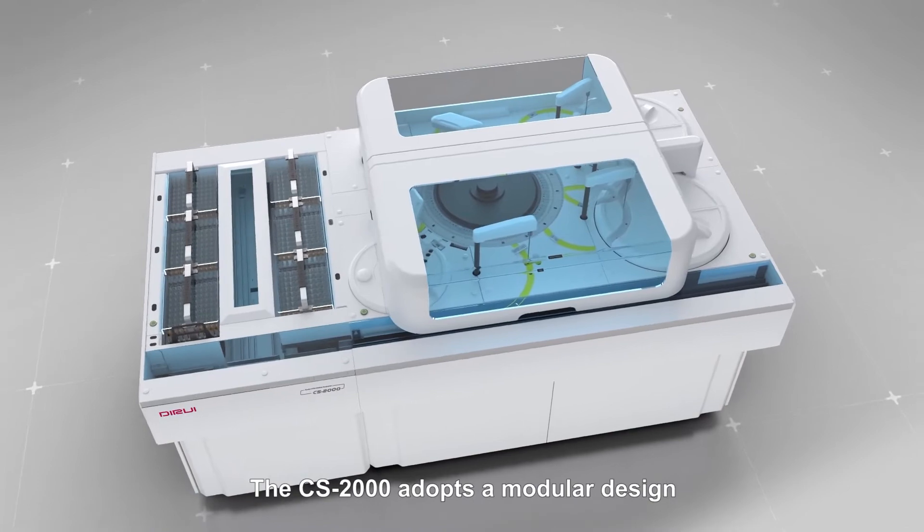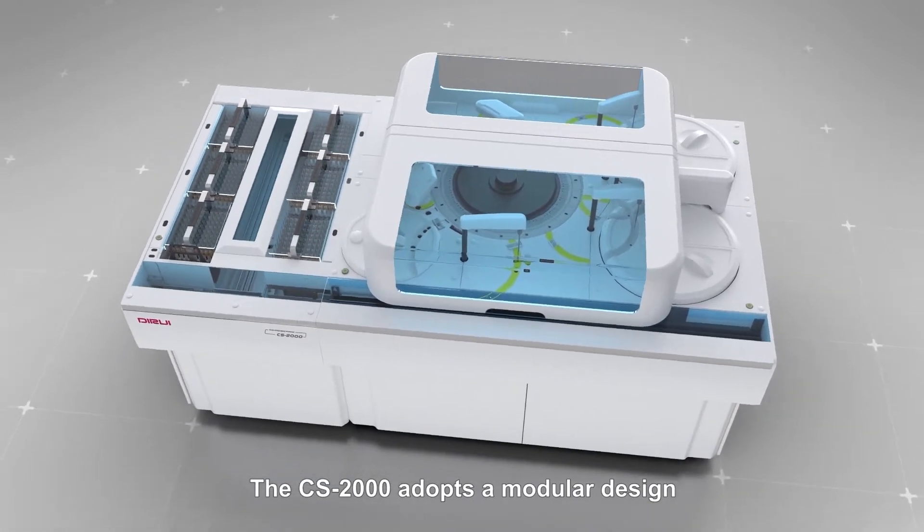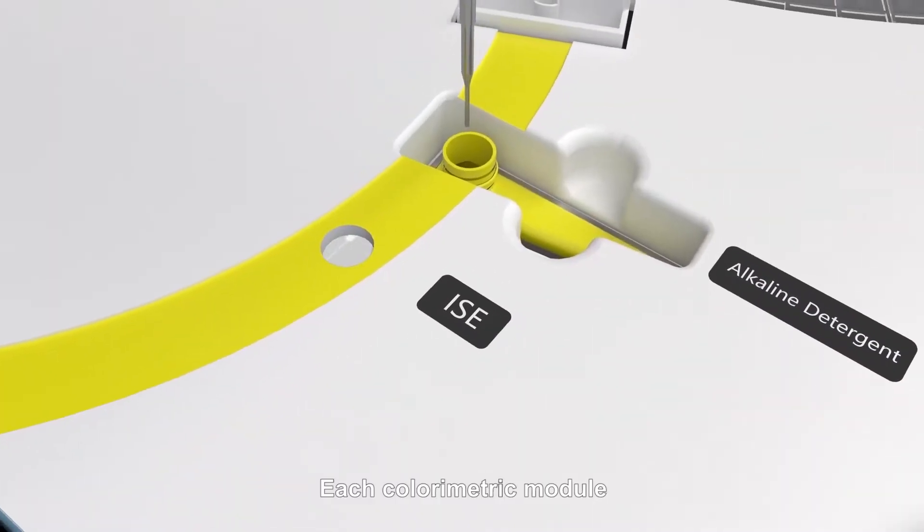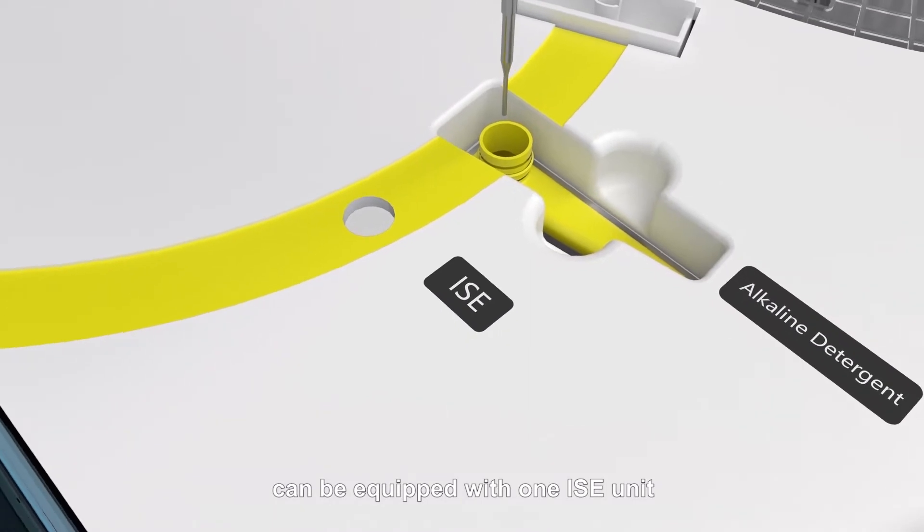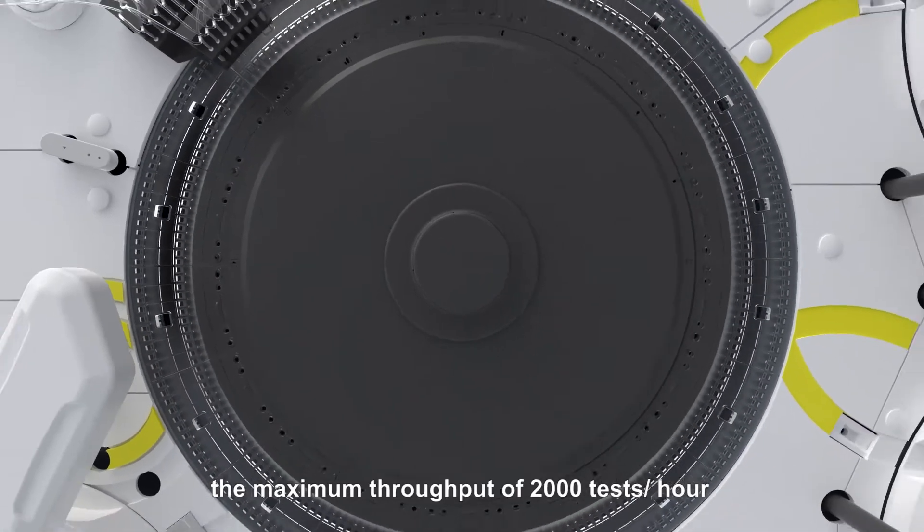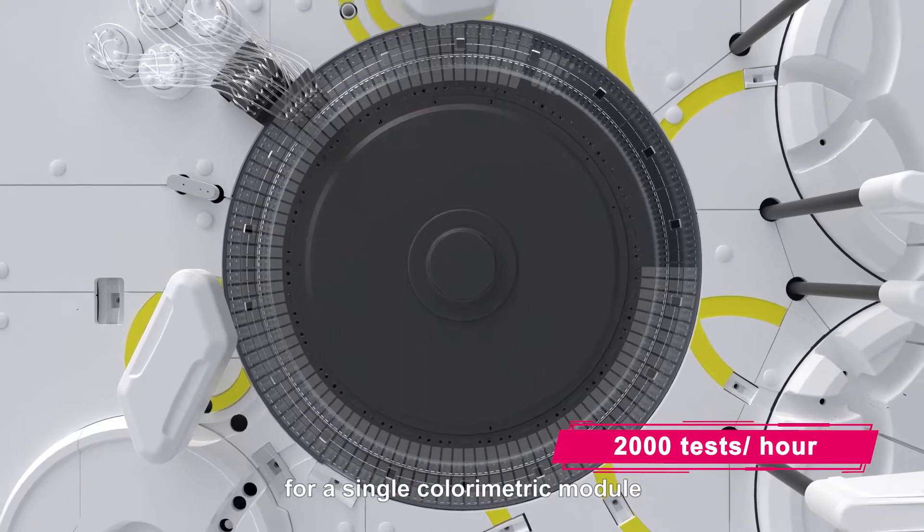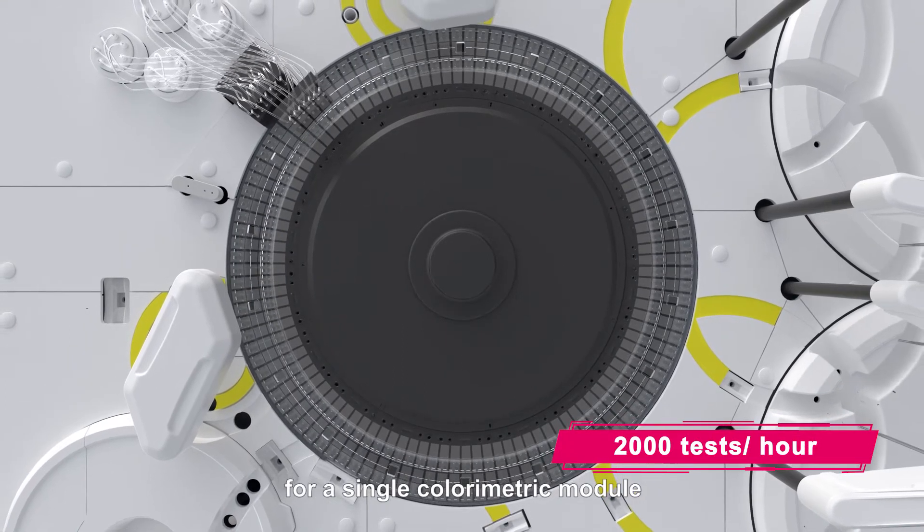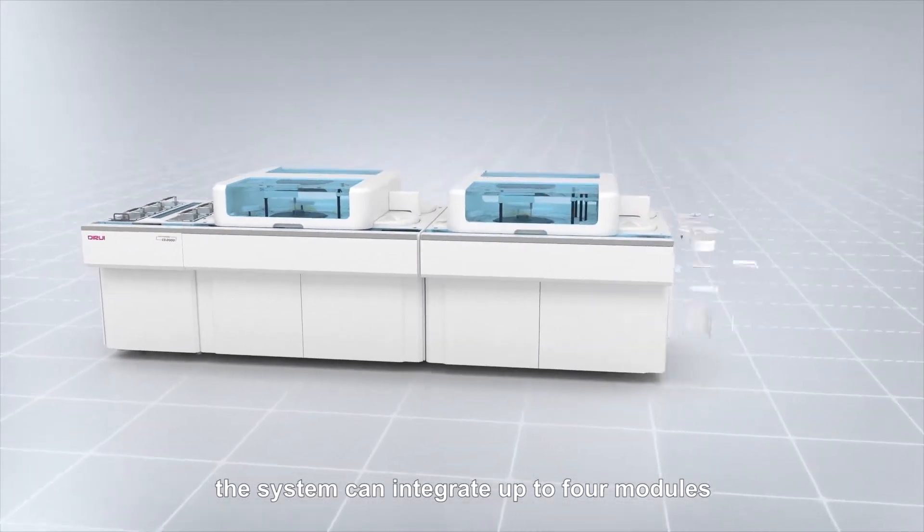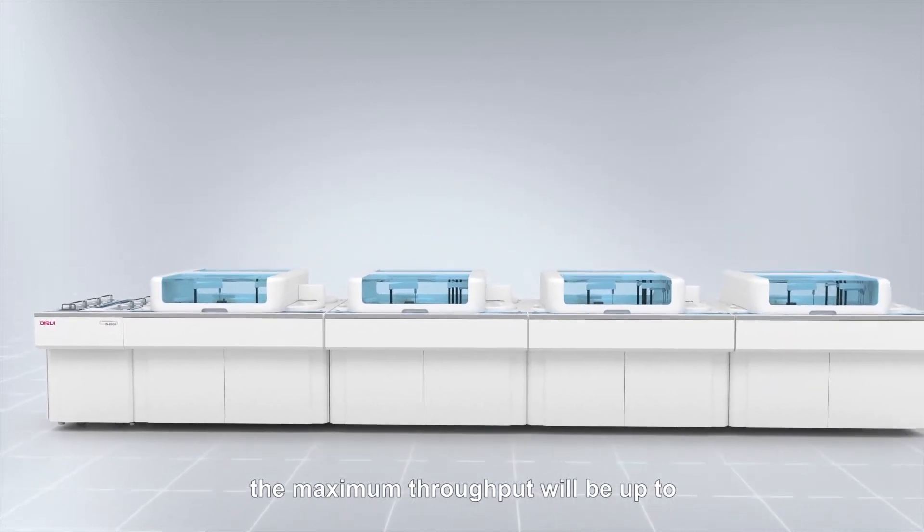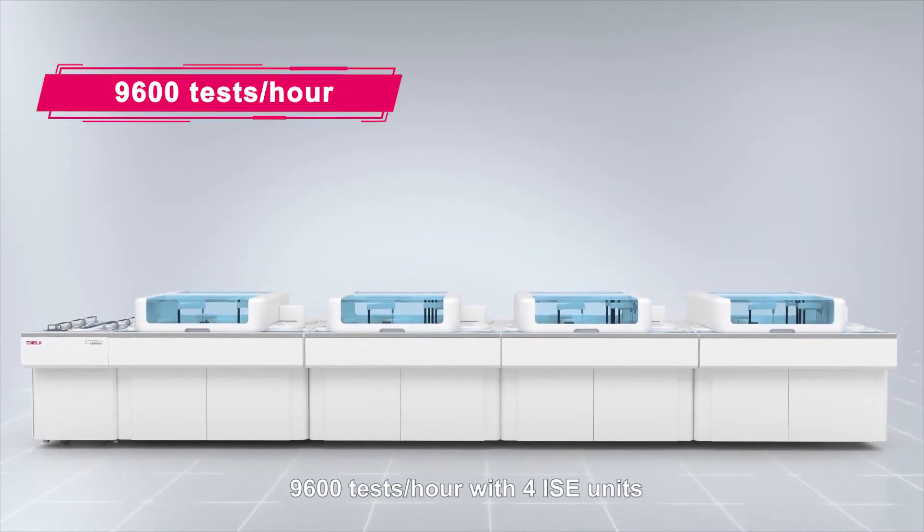The CS2000 adopts a modular design. Each colorimetric module can be equipped with one ISE unit. The maximum throughput of 2,000 tests per hour for a single colorimetric module. The system can integrate up to four modules. The maximum throughput will be up to 9,600 tests per hour with four ISE units.